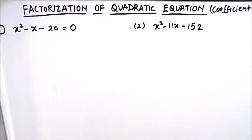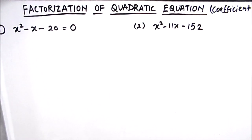Hello students. In this video we are going to learn how to find the factors of the quadratic equation using the factorization method. There are three methods for finding the factors or roots of the quadratic equation: the first one is the formula method, the second one is completing the squares method, and the third one is the factorization method. So here in this video we will be learning the method of factorization.